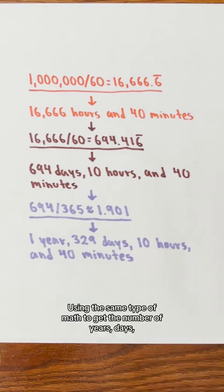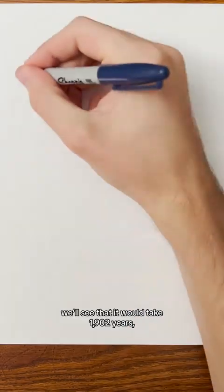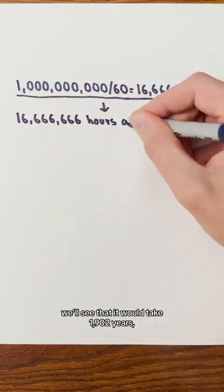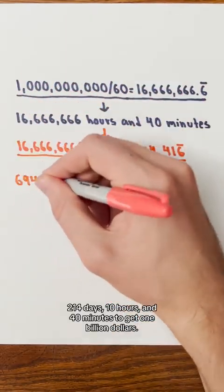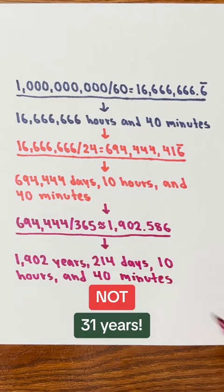Clearly not 12 days. Using the same type of math to get the number of years, days, hours, and minutes, we'll see that it would take 1,902 years, 214 days, 10 hours, and 40 minutes to get 1 billion dollars. Not 31 years.